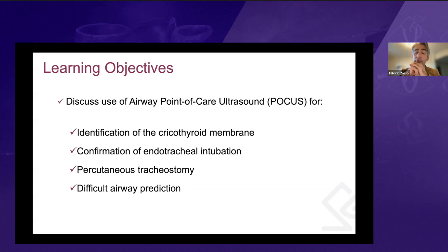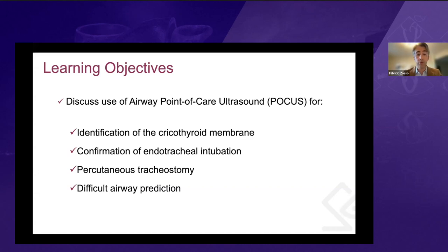As learning objectives, we're going to discuss airway ultrasound with four main points: identification of the cricothyroid membrane, confirmation of endotracheal intubation, ultrasound-guided percutaneous tracheostomy, and the ability to predict difficult airway with airway ultrasound.